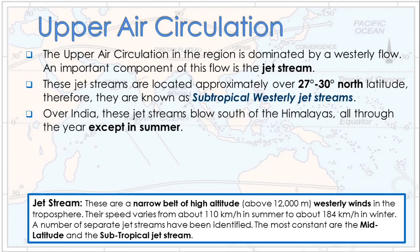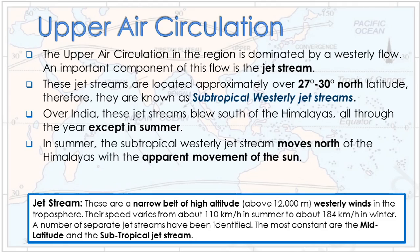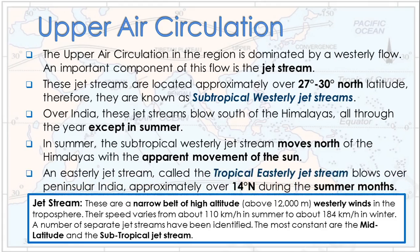Over India, these jet streams blow south of the Himalayas all through the year except in summer. In summer, the subtropical westerly jet streams move north of the Himalayas with the apparent movement of the sun. An easterly jet stream, called the tropical easterly jet stream, blows over peninsular India approximately above 14 degrees north during the summer months.